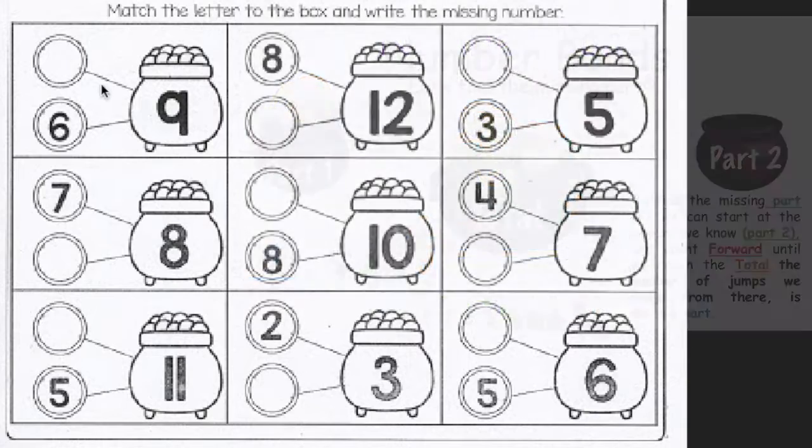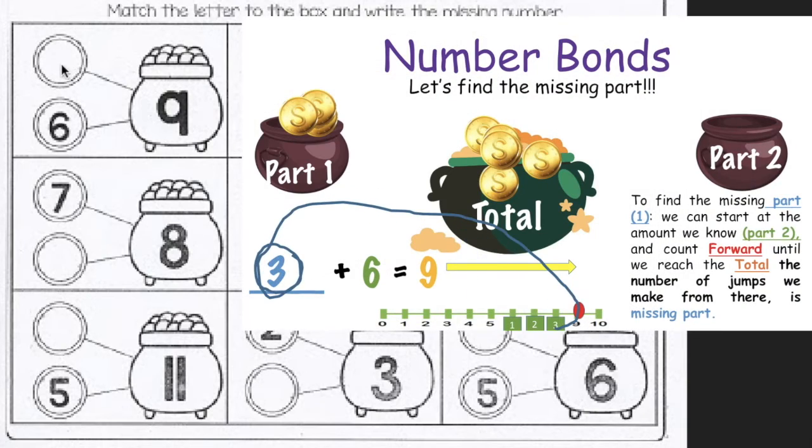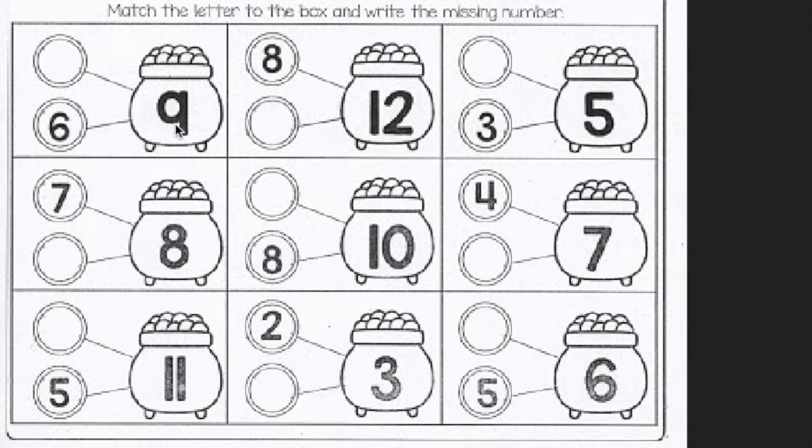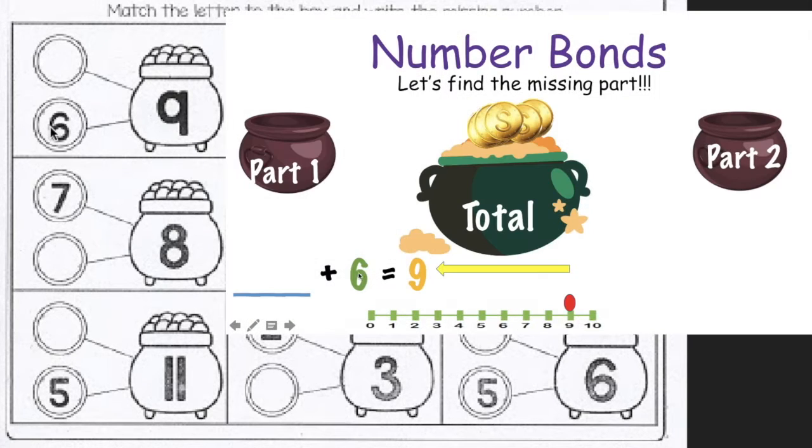Entonces, como me quedaron tres deditos en la mano, esa sería la parte que me falta. Another way to do it is counting backwards. So we have nine, the big total, and we go backwards. And we stop at this part. Nine, count your fingers. Eight, seven, six. We have three fingers.